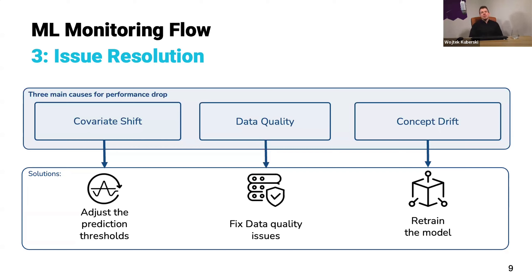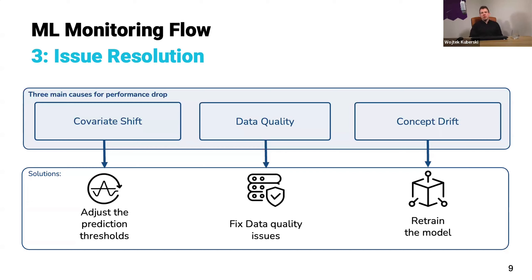If covariate shift happens and data drifts to a region where it's very hard to predict — close to a class boundary — simply retraining the model won't really help because the data is just noisier. So we need to adjust the prediction thresholds. For predictive maintenance use cases, we'd generally want to increase the recall so we maintain even if it's potentially not needed, sacrificing a bit of precision to make sure we avoid machine issues. That way we retain a big part of the business impact because the machine still performs well and is maintained less often than on a fixed schedule.